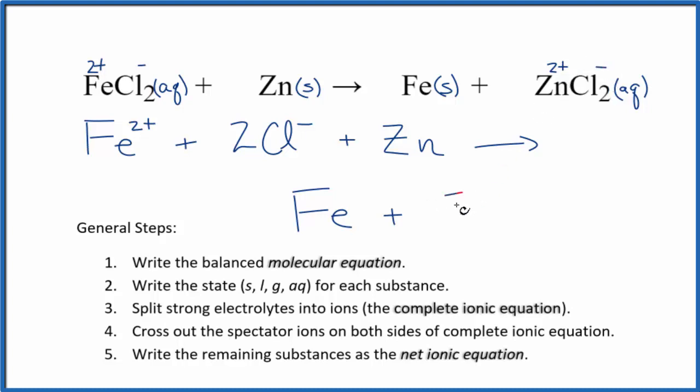So we have our zinc ion, Zn2+, and then we have two of those chloride ions, just like we have in the reactants. So this is the complete ionic equation.